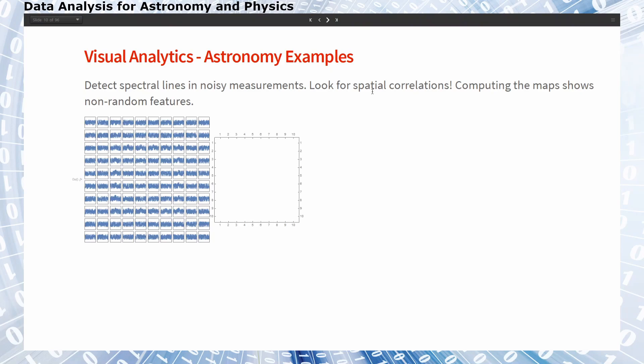So on these positions on the sky imagine we detected these spectra. They are very noisy and by looking at the spectra it is not very easy to detect a certain spatial configuration.